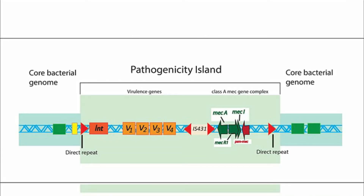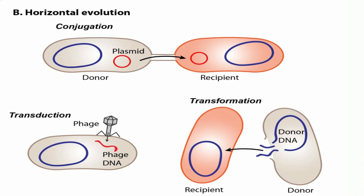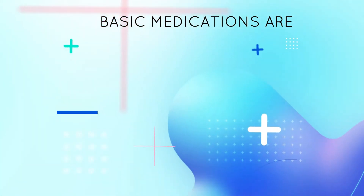Methicillin-resistant Staphylococcus aureus has two types: hospital-acquired and community-acquired. In community-acquired MRSA, there is a modified fourth element of the mecA gene. In hospital-acquired MRSA, there is modification in the second and third elements of the mecA gene. Both modified genes confer resistance to beta-lactams. All these bacteria gain resistance through two mechanisms: vertical transmission and horizontal transmission.